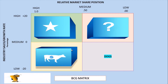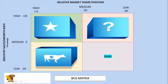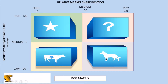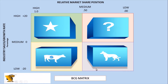QUESTION MARKS are strategic business units competing in high-growth industries but having a relatively weak market share. Resources should be invested in them to enhance their competitive positions. DOGS are strategic business units with weak market share in low-growth industries. Because they have a weak position and limited potential, most analysts recommend that they should be divested.